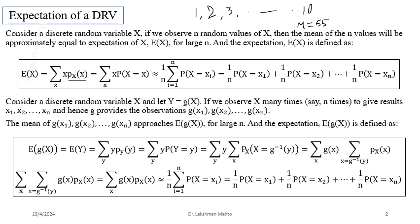Mode is the value that occurs most commonly. In higher mathematics courses, these computations take different routes through distributions. For mean-type quantities, you proceed with a Gaussian distribution or a square loss function. For median, you deal with a modulus loss function or the Laplace distribution. Mode is related to the Laplace distribution from a probabilistic perspective. These connections will become clearer in advanced probability or statistics courses.